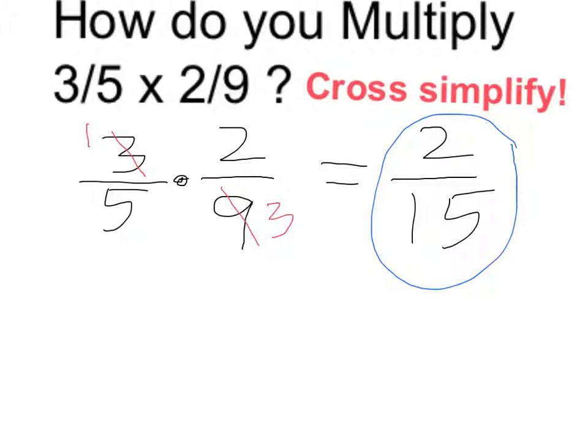Remember, when you're multiplying fractions, you can start by cross-simplifying - in this case, between the 3 and the 9. Thank you.